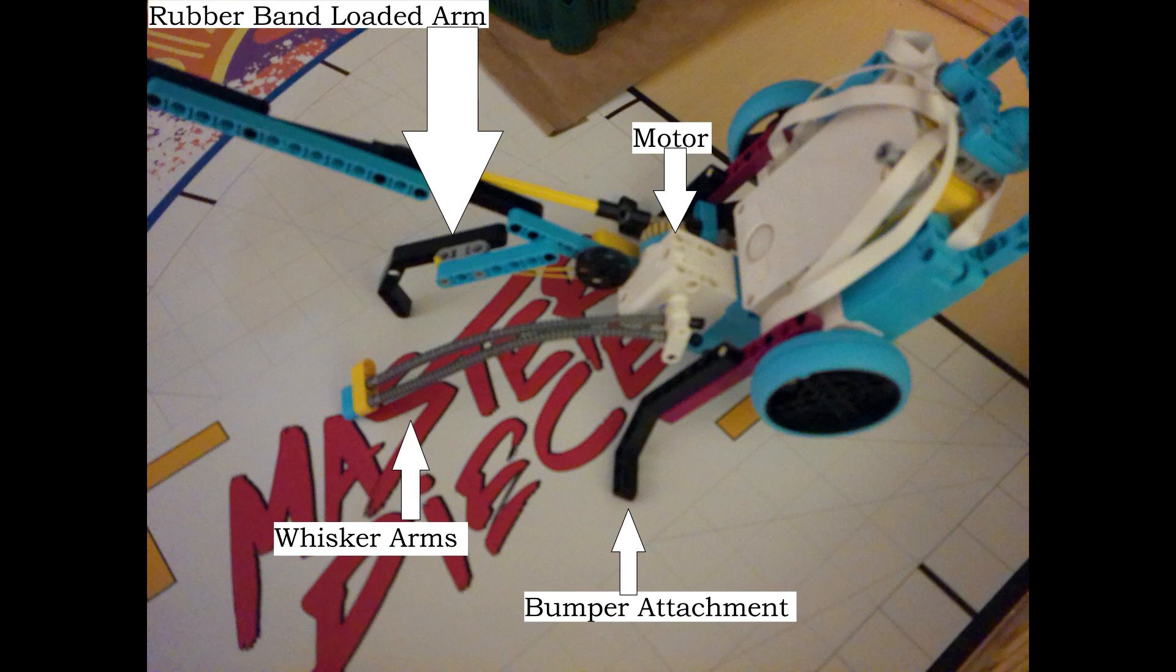There's also a rubber band-loaded arm which the robot doesn't balance on, but this assists the robot in getting up. The robot will swing these flexible whisker arms around, and these will put just enough pressure on the ground to lift the robot up.